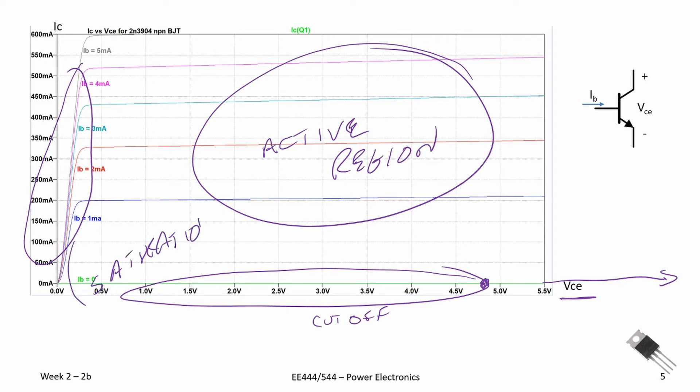So when we are using this device as a switch, we are moving between cutoff, the device is open, to saturation. In that region the switch is closed and we have very low voltage drop across the collector and emitter.